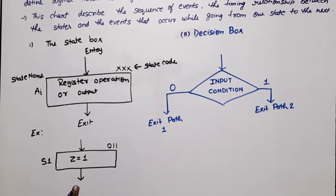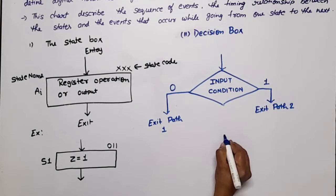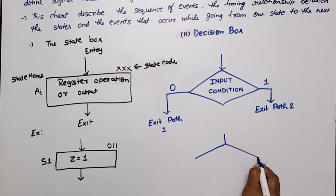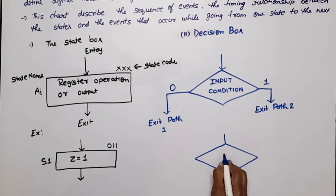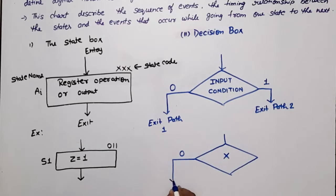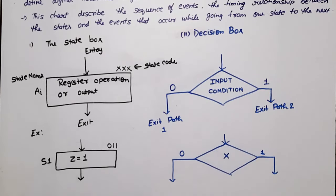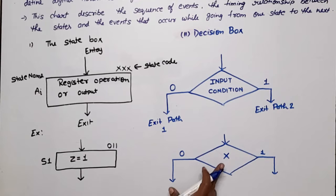Let's take an example. Suppose after a state, we have to check the condition. We write X in the decision box. If X is equal to 0, then one exit path is taken. If X is equal to 1, then the other exit point is taken. The decision box basically describes the effect of an input on the control subsystem. These paths lead to the blocks corresponding to the next state — meaning, if X is 0, what is the next state, and if X is 1, what is the next state.